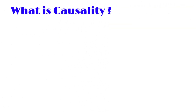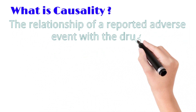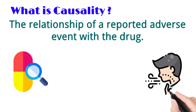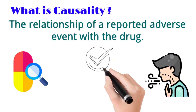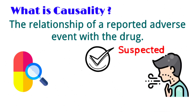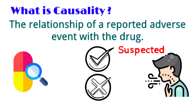What is causality of an event? Causality is the relationship of a reported adverse event with the drug. For example, after taking a drug, a patient experiences difficulty in breathing. If, as per the medical knowledge of the doctor, the chances of the drug causing the event — breathing difficulty — are high, then the drug-to-event causality is considered as suspected. And if, as per the medical knowledge of the doctor, there were very less chances or no chances of the drug causing breathing difficulty, then the drug-to-event causality is considered as not suspected.